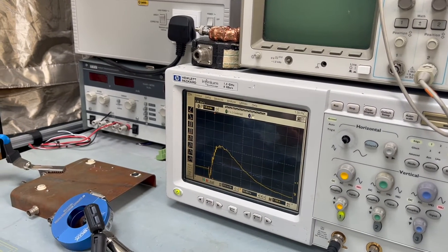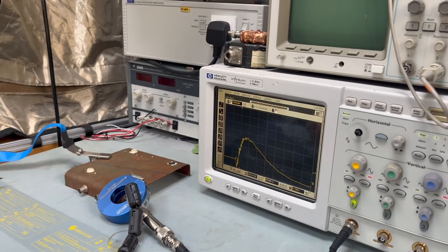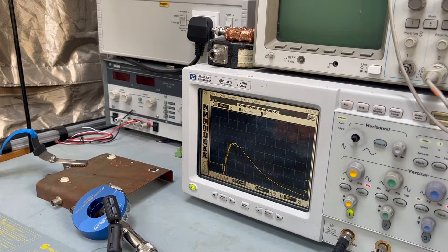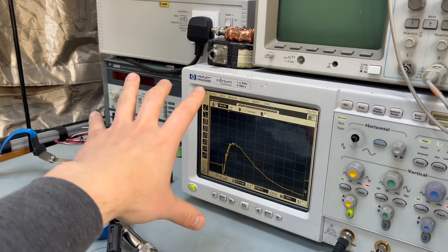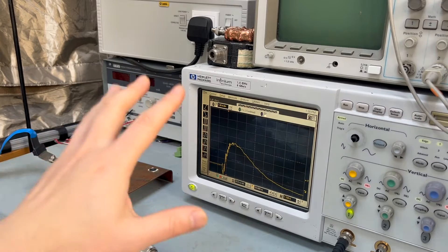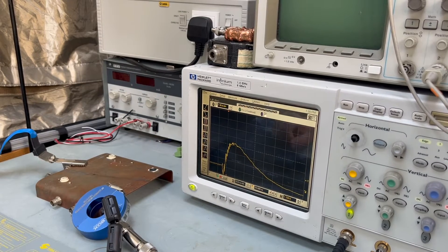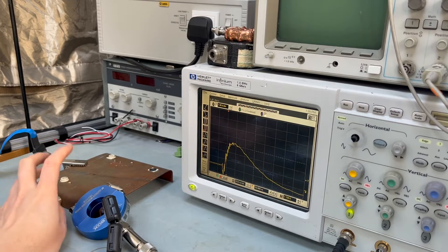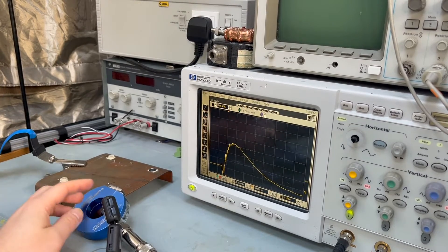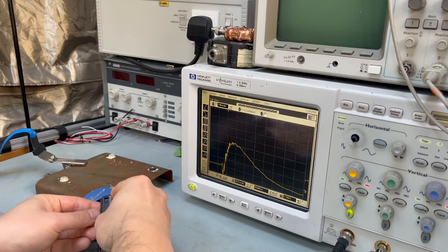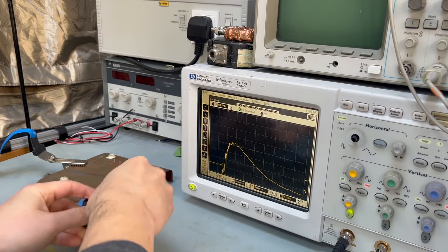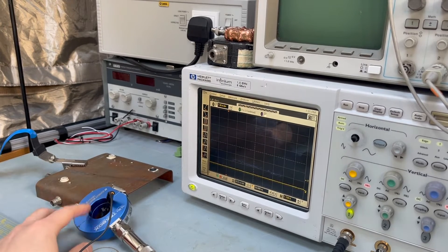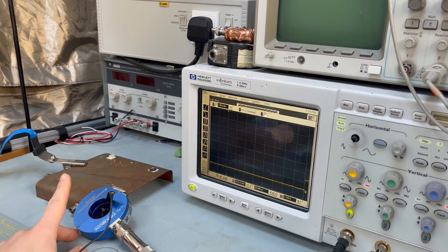We want to demonstrate this concept by using an ESD gun. We have our oscilloscope 1.5 gigahertz to capture the ESD event. And you can see this is really a simple demonstration. This is just a metal case. And we have, let me just remove this ferrite first. And you can see, we have our current probe.